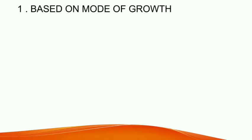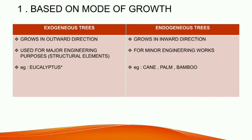First is based on the mode of growth. Based on the mode of growth, trees of timber can be classified as exogenous trees and endogenous trees. Exogenous trees are the type of trees which grow in bulk in the outward direction. Timber used for engineering purposes is mostly derived from these trees. For example, eucalyptus, teak, sal, etc.